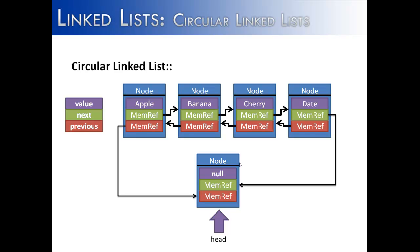The big advantage to doing this is that one of the common problems with a linked list is you constantly have to check whether the list has anything inside of it, because if it's null it's going to cause problems. Well, if you start with a sentinel or dummy node, you're not going to have the problem of an empty list because you're always going to have at least one node inside of the list.